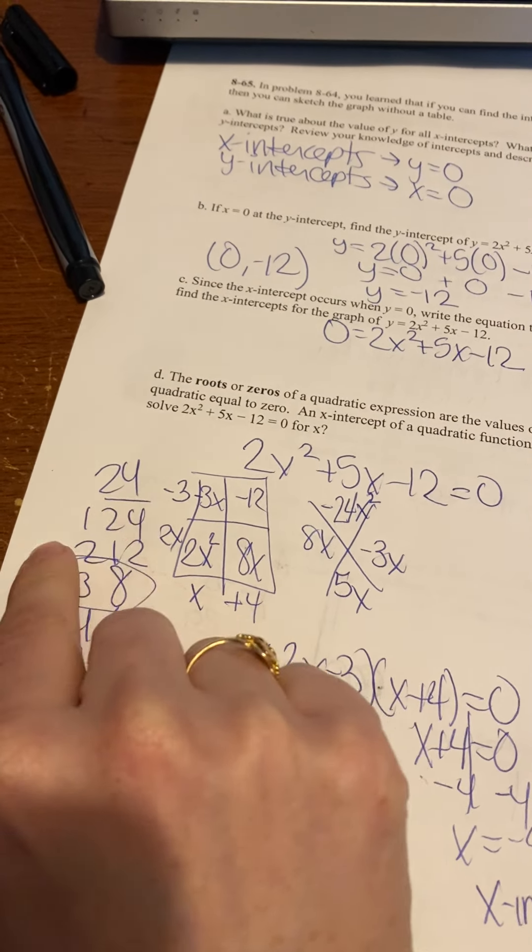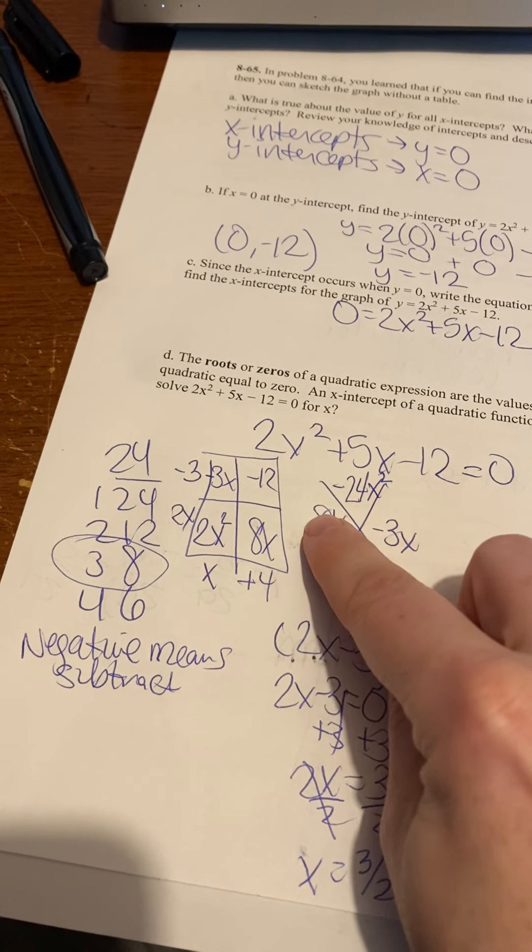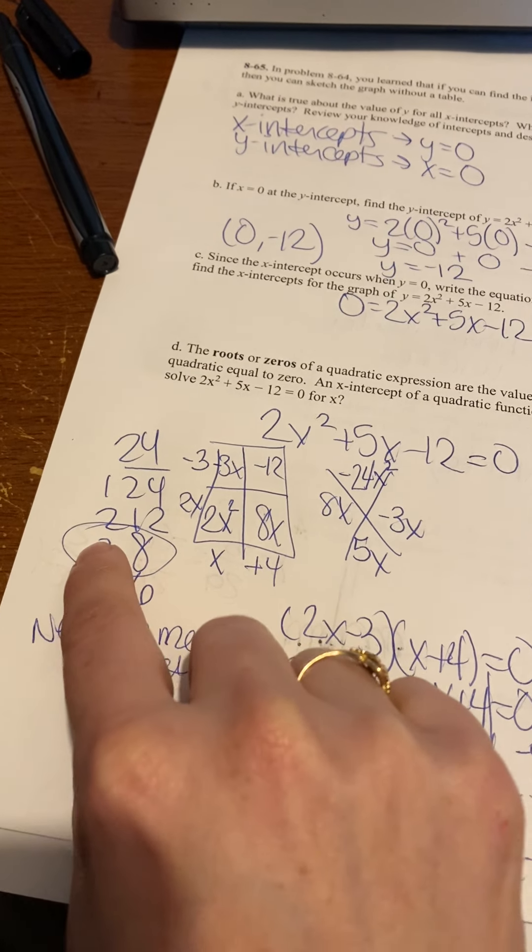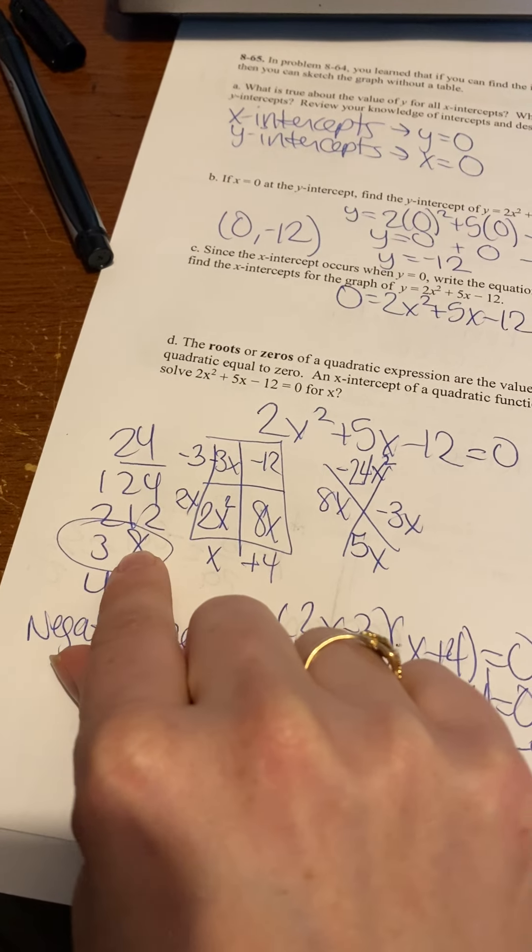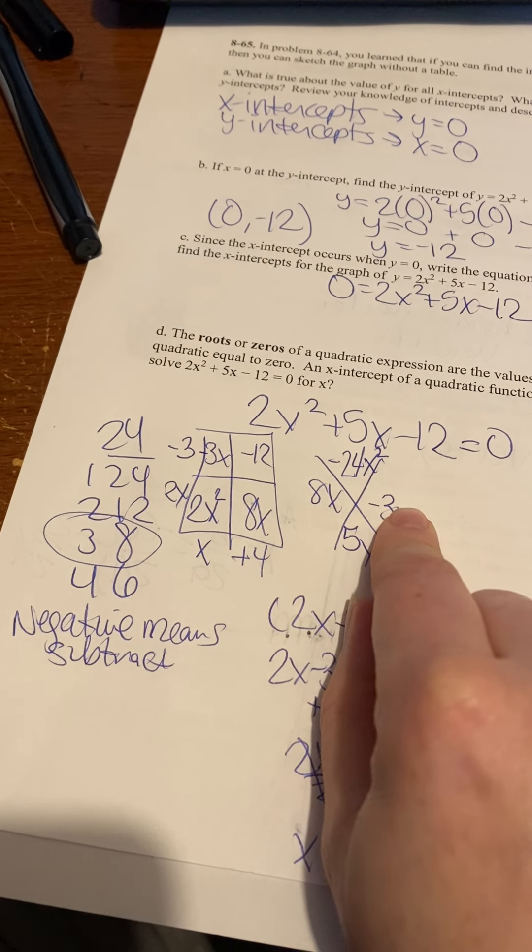So over here, I listed my factors. Since this one's negative, I know one needs to be positive and one needs to be negative. So when I look at these, I'll have to subtract. So it has to be 3 and 8. And then, since I'm subtracting, it will get the biggest sign.